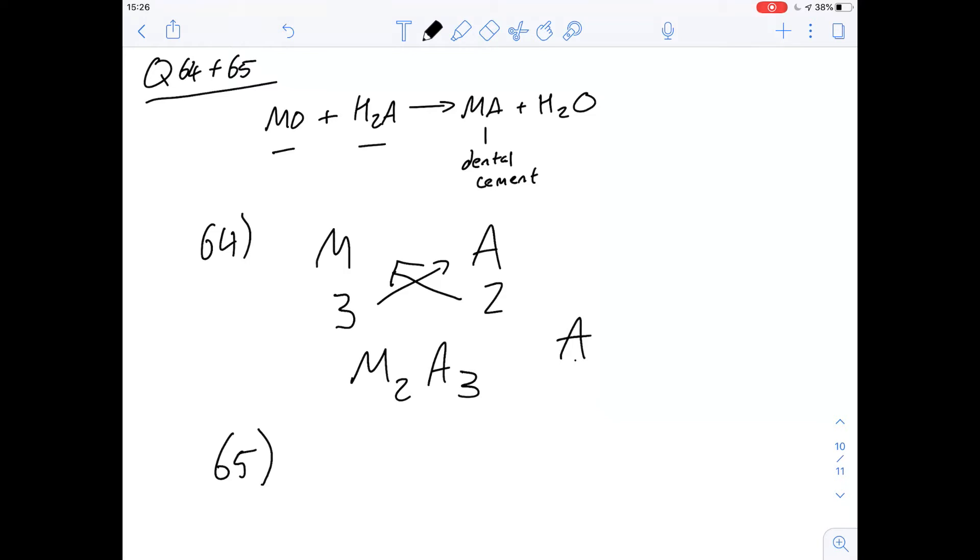Okay so the weakest cement out of the four that we have here is going to be zinc polycarboxylate and it has quite a low amount of non-evaporable liquid so it's actually the least hydrated so the answer is not going to be A.